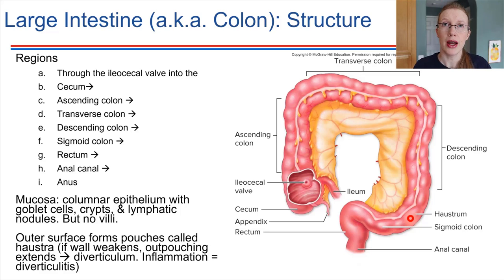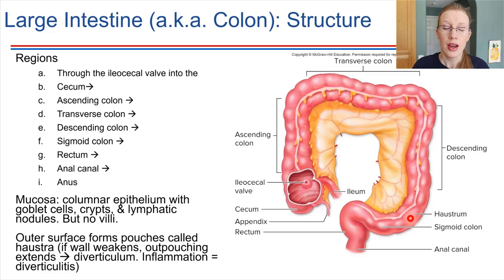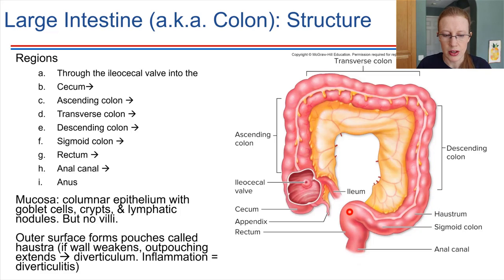Diverticula can be problematic — they can be sites where food gets stuck, leading to inflammation. That's called diverticulitis. Eating a high-fiber diet really helps prevent the development of diverticulitis. If diverticulitis is going to develop, it'll probably be in the sigmoid colon, in this region where there are some turns — that tends to be where diverticula form.